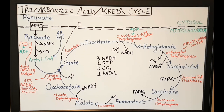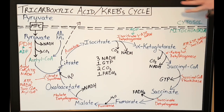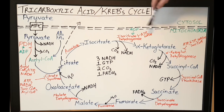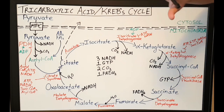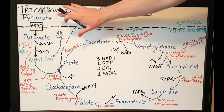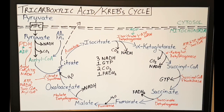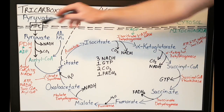To get started, I have here a diagram: this is our cytosol, and this is our mitochondria, with these two dashed lines signifying the outer and inner membrane of the mitochondria. The first thing that happens is pyruvate is transported into the mitochondria through a mitochondrial pyruvate carrier, or MPC.